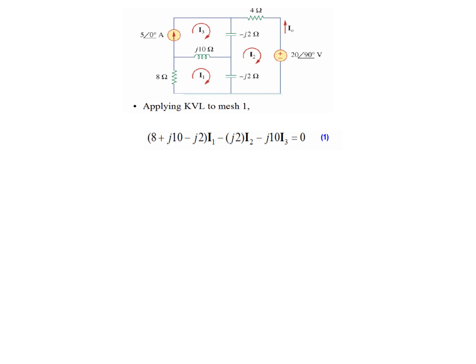For mesh 1, we write all terms with I1: (8 + j10 - j2)*I1. Then all terms related to other currents with a minus sign: minus j2*I2, and minus j10*I3. Note: there should be a minus sign before the j10*I3 term.